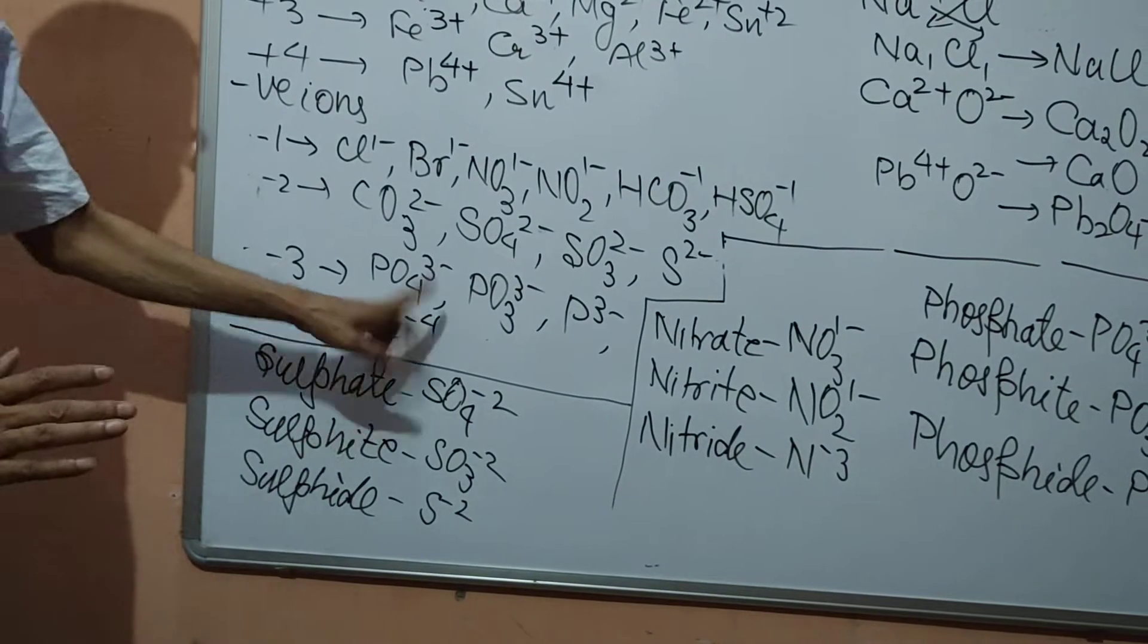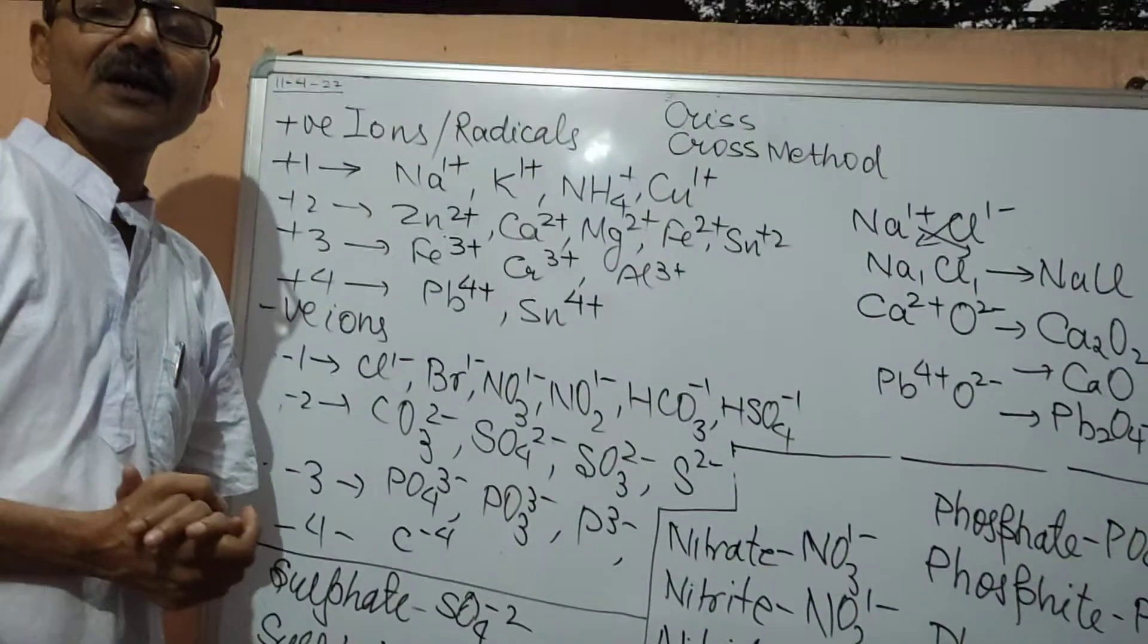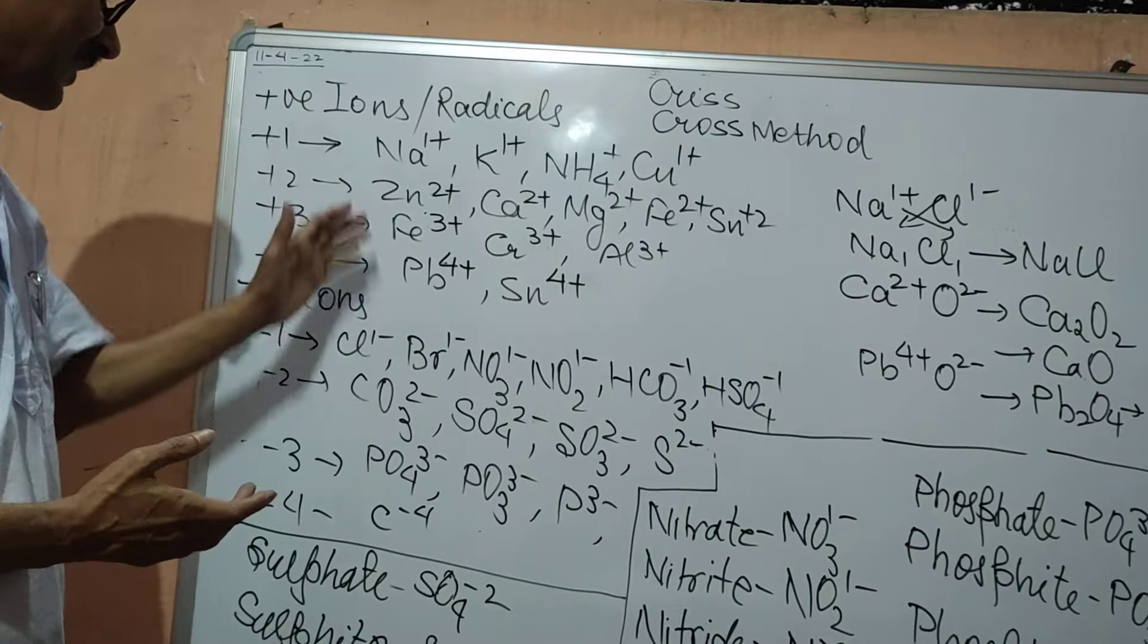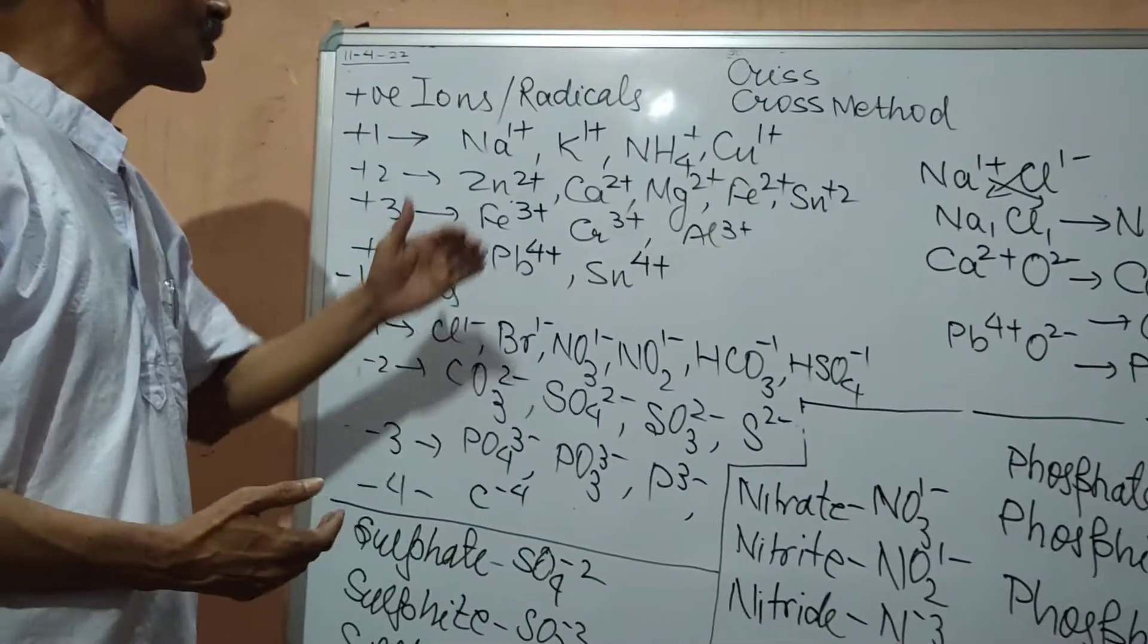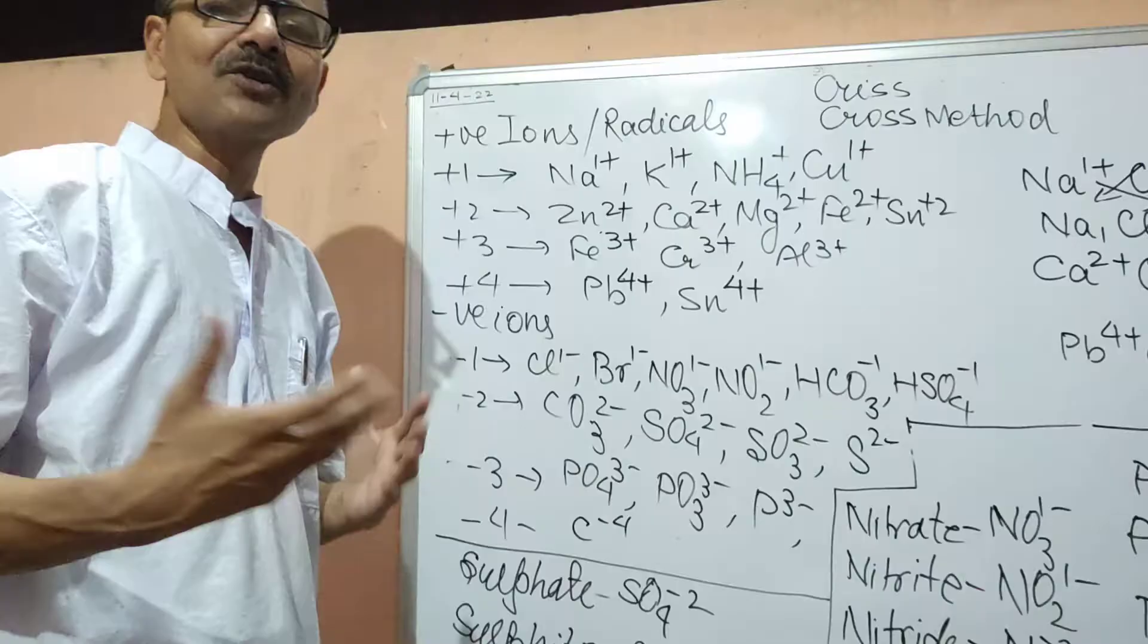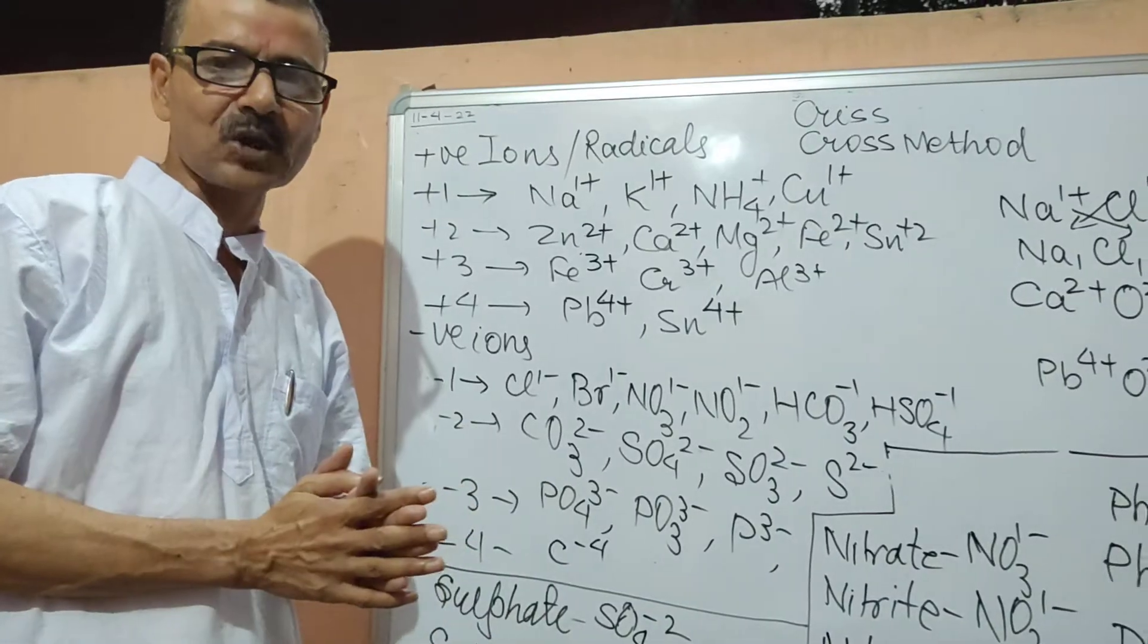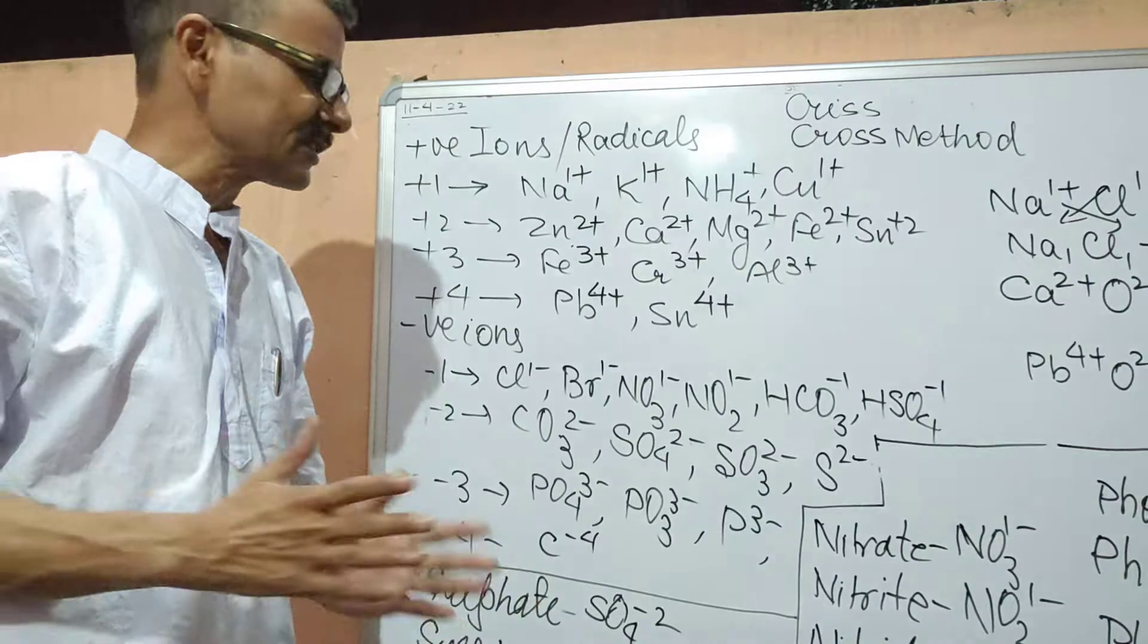So here with the help of these many symbols which we have written. In my calculation it is 14 plus and 14 minus. 14 cations and 14 anions. I think we can write 14 into 14, 196 formulae absolutely correctly. So knowing the valency chart is very important.